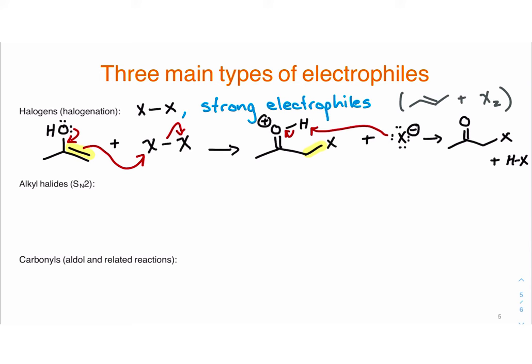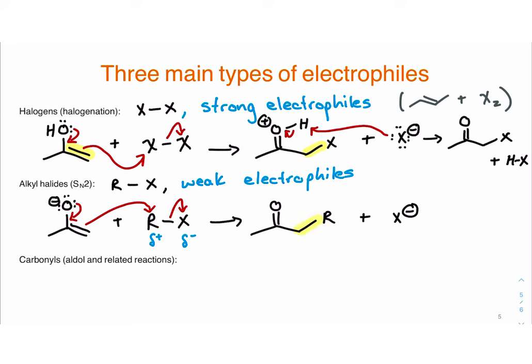Those electrons from the pi bond have formed that new bond between the alpha carbon and the halogen. The reaction is exactly the same with the alkyl halides, only this time the alkyl halides are weak electrophiles. These alkyl halides, primary and secondary ones in particular or methyl, react in the SN2 reaction, but they're such weak electrophiles that they need a strong nucleophile to react. So they'll react with the enolates which are the strong nucleophiles, with delta plus on the R and delta minus on the X. That's effectively an SN2 reaction.